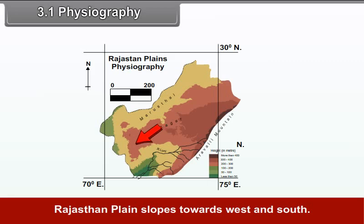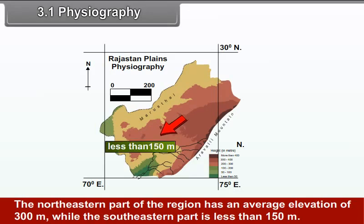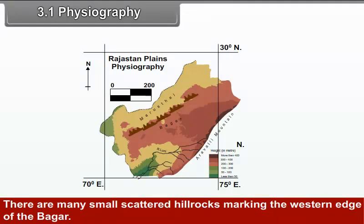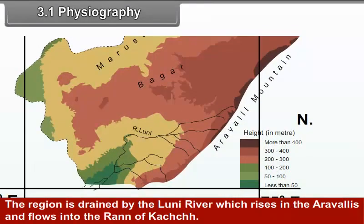3.1 Physiography. The Rajasthan Plain slopes toward west and south. The northeastern part of the region has an average elevation of 300 meters, while the southeastern part is less than 150 meters. There are many small scattered hill rocks marking the western edge of the bagar. Sand dunes extend over the western parts of the region. The region is drained by the Luni River, which rises in the Aravlis and flows into the Ran of Kutch.